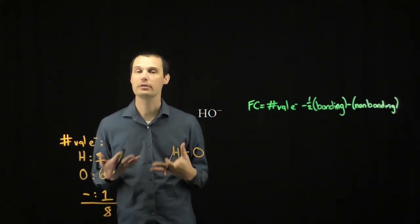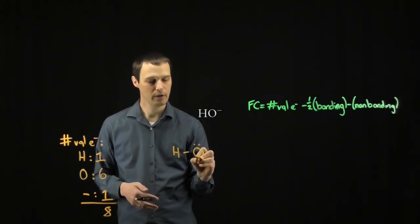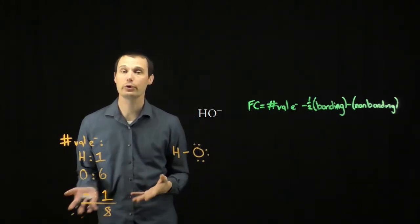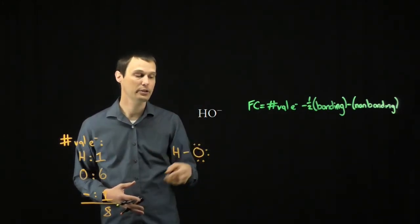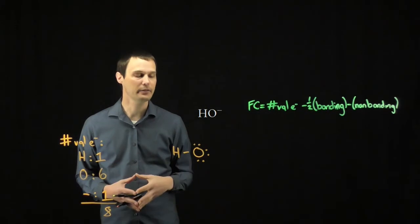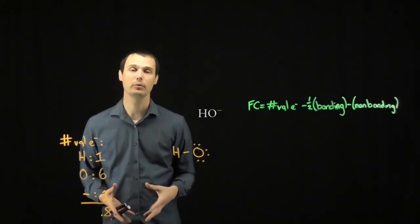I'll start by adding lone pairs to the most electronegative element. That would be oxygen. So I'll add lone pairs to oxygen until I either get to the octet rule or use up all of my available electrons. Adding six electrons around oxygen brings oxygen to a full octet of eight, and also uses the remaining six electrons that I have available to me in the Lewis structure.